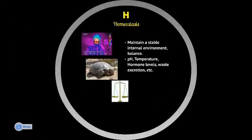H is homeostasis. In order for an organism to continue to live and thrive, it has to maintain a stable internal environment. Everything needs to be balanced. Inside you, you have systems that maintain the pH of your blood and the temperature of your body — how do you stay warm when it's cold outside, and how do you stay cool when it's warm outside? You also have systems that maintain your hormone levels. Hormones are chemicals coursing through our veins, bringing chemical signals to different parts of our bodies and telling our organs what to do and when to do it.